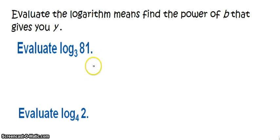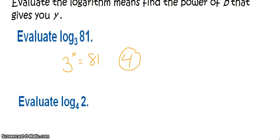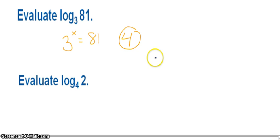So in this first example, we have 3 to what power is 81? 3 to the fourth is 81. 3 times 3 times 3 times another 3 gets us that 81. So when we're evaluating, we're kind of finding x, though there's no written x there for us.